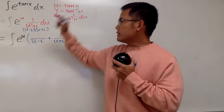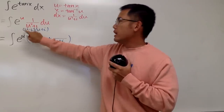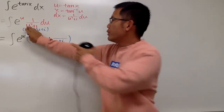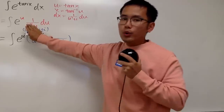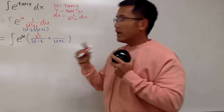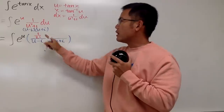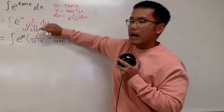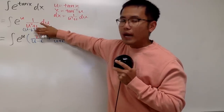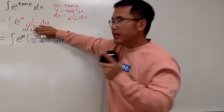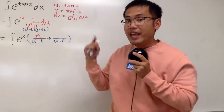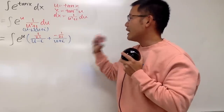To figure out the constants, we cover up the denominator. To make u minus i equal to zero, u has to be i, and plugging in gives 1 over i plus i, which is 1 over 2i. Similarly, covering the other denominator, to make u plus i equal to zero, u must be negative i, giving 1 over negative i minus i, which is negative 1 over 2i.